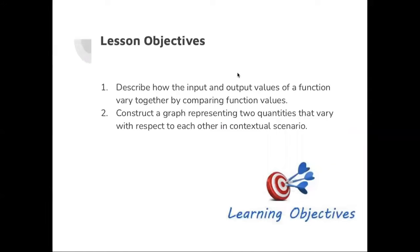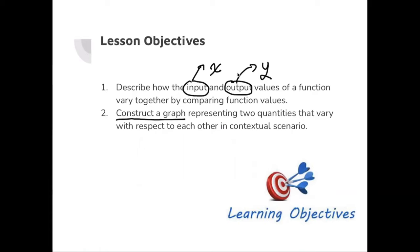We're going to cover two lesson objectives. First, describe how the input and output values of a function vary together by comparing function values. Number two, construct a graph representing two quantities that vary with respect to each other in a contextual scenario. You should immediately know that the input is the x values and the output is the y values. These are key terms you have to know, and you should also know how to make a graph from the given information.